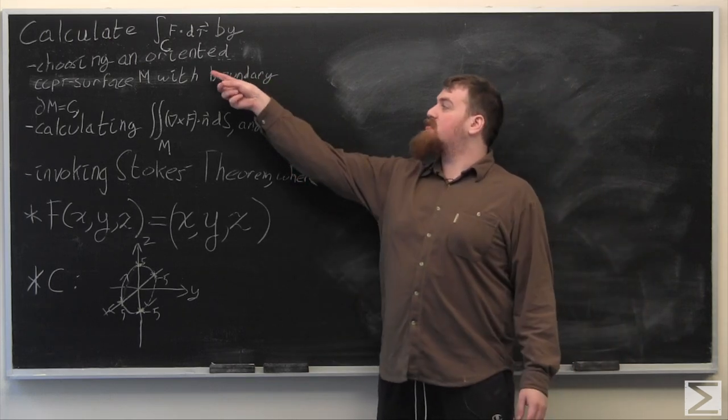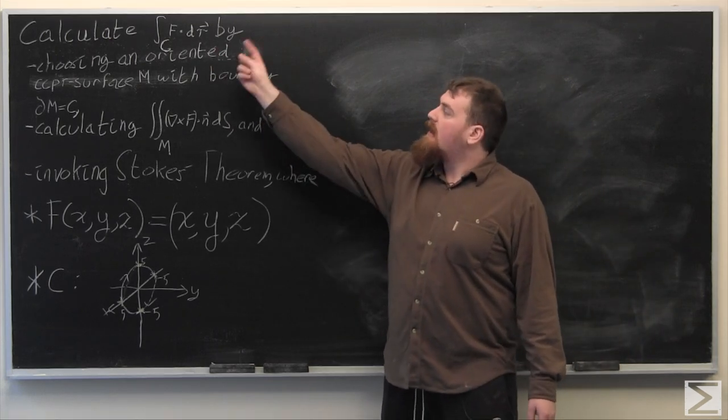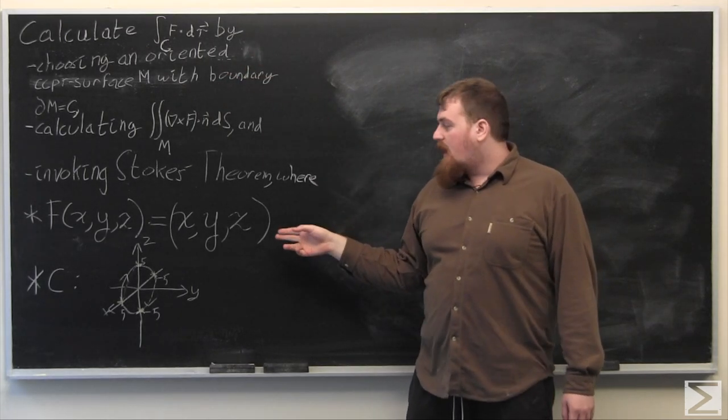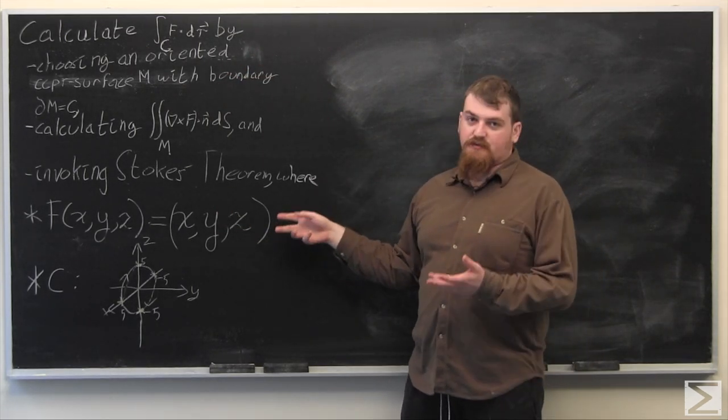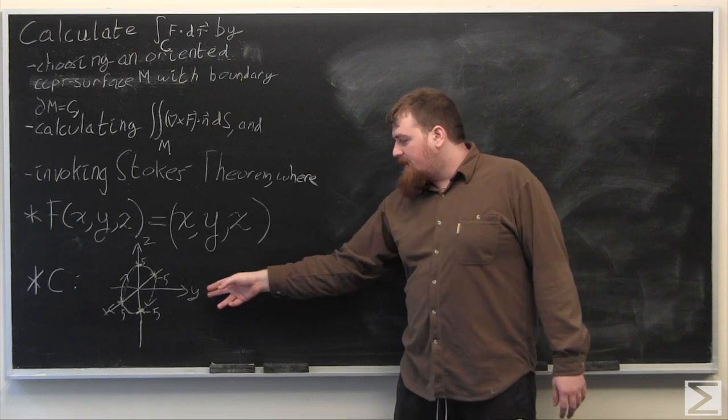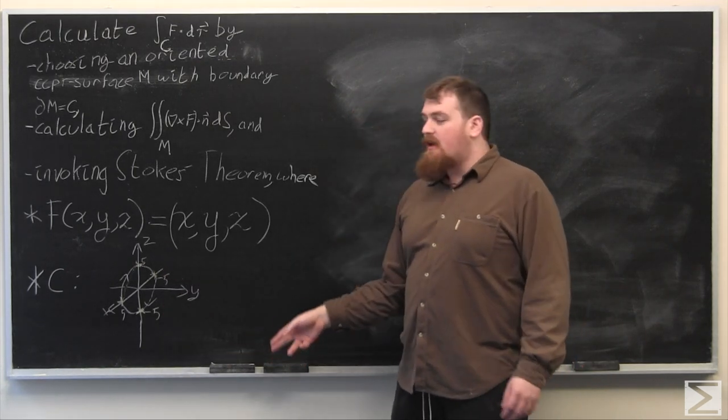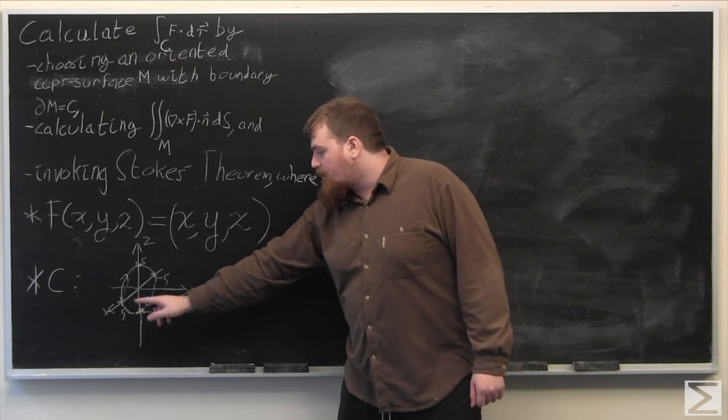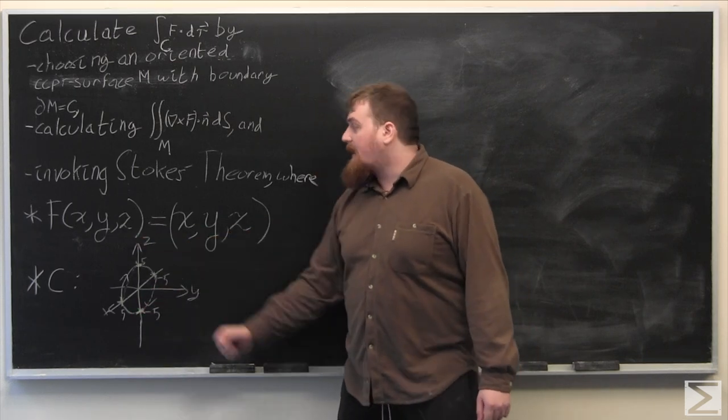In this problem we're asked to calculate the line integral of the vector field f dot dr around the closed curve c, where f of x, y, z is the vector field x, y, z, and c is the circle of radius 5 in the x, z plane around the origin oriented from the positive x-axis to the positive z-axis.